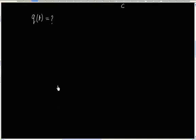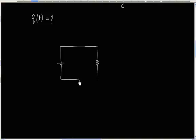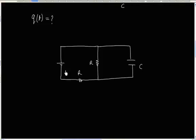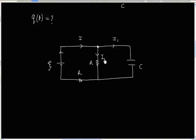Let us redraw the circuit. We have two resistors, each with resistance R, and we have a capacitor with capacitance C. The battery EMF is Xi. Let us say the battery sends a current of I. When this current reaches the junction, it is divided into two parts. Let us say one part has a current of I1, then the other part will have a current of I minus I1.